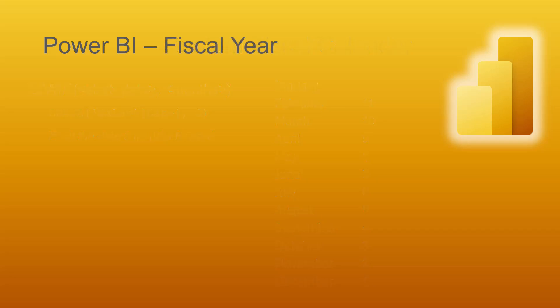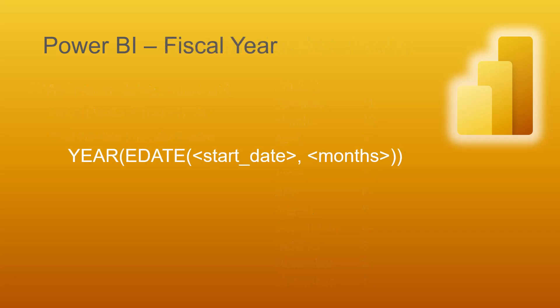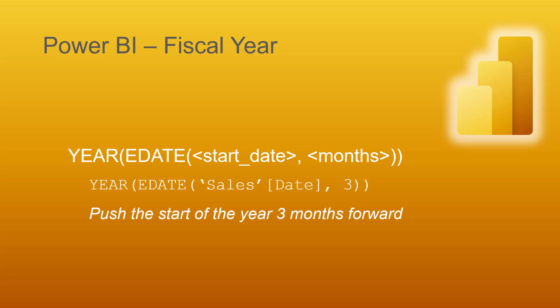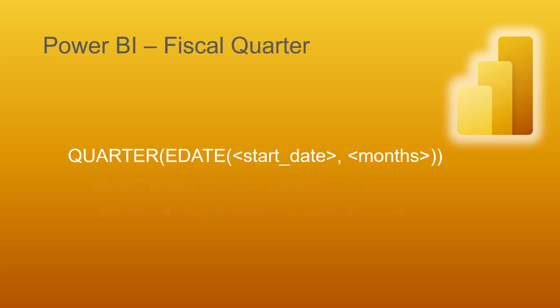This sounds a little weird, but when you see it in practice it'll make sense. To calculate the fiscal year, we'll use EDATE to take a date and push it a certain number of months into the future, but the only part of that date we want is the year — so we wrap the whole thing in a YEAR function. For example, taking October 2021 and pushing it three months forward gives January 2022, but we only keep 2022.